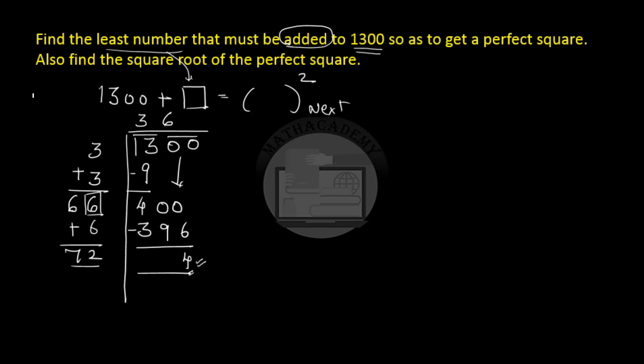So what we do is we find the square of the number which is one more than our quotient which is 36. So one more than 36 is 37 and we try to find the square of 37. So 37 squared gives us 1369.